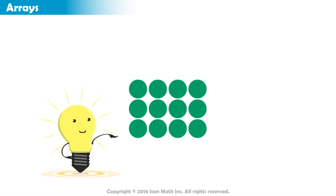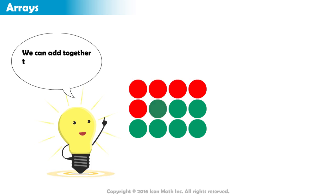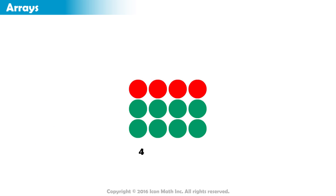To find the number of objects in this array, we can add together the number of objects in each row. There are four objects plus four plus four, and that equals twelve objects.